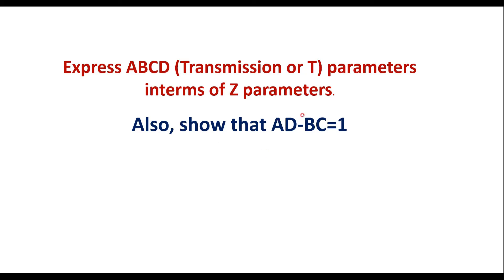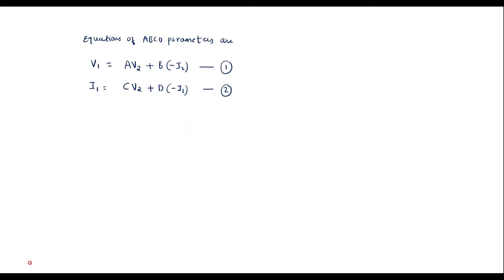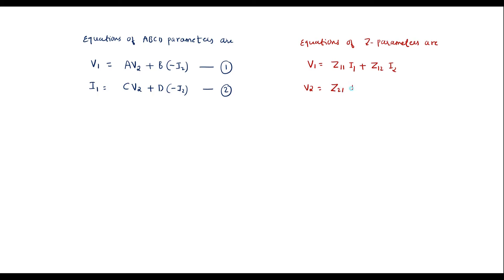Similarly, let me write the Z parameter equations. The equations of Z parameters are: V1 is equal to Z11·I1 plus Z12·I2, and V2 is equal to Z21·I1 plus Z22·I2. Let me call these equation 3 and equation 4.